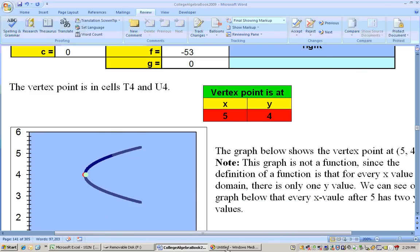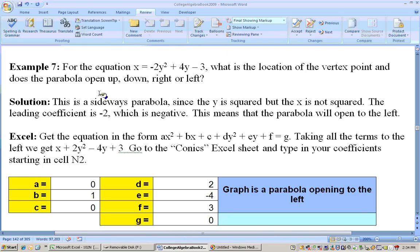So let's see what else we've got here. Okay, let's take a look at another example here. For this equation, x = -2y² + 4y - 3. What is the location of the vertex point? And does the parabola open up, down, right, or left? Again, it's solved for x. The y is squared, so it's going to open up to the right or to the left. Now, since the leading coefficient is negative, that means it's going to open to the left. So this is going to be a parabola that opens up like this, to the left, like that. Now, where's the vertex point?